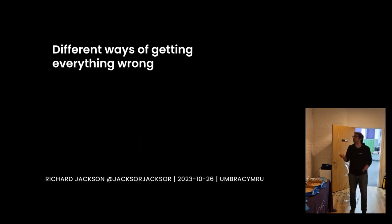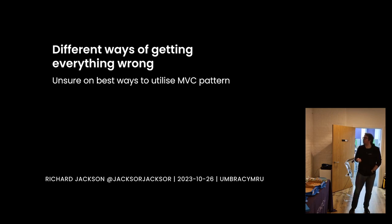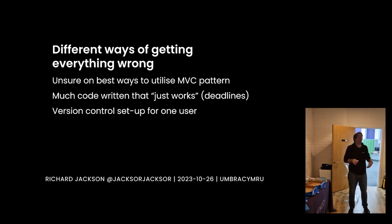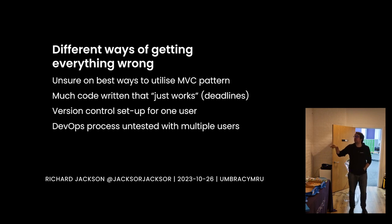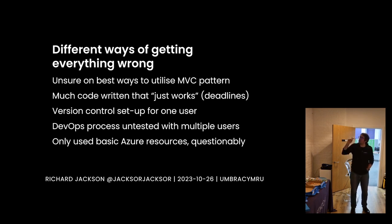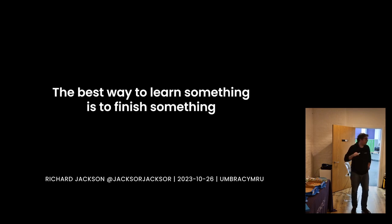Different ways of getting everything wrong: I was unsure of the best ways to utilize certain patterns — much of it was just written so that it would work and had just gone over the line. For version control, I didn't have a branching strategy — it was just me, so everything went to master and I felt good. For DevOps, there's an oversight of just checking how this would work for multiple users. And using very basic Azure resources, quite questionably — there were reasons around budget and the lack of money. Shout out to Azure, who after about two weeks of complaining have now written off all of my charges, which they promised they would do and then billed me anyway — so that was a fun discussion.